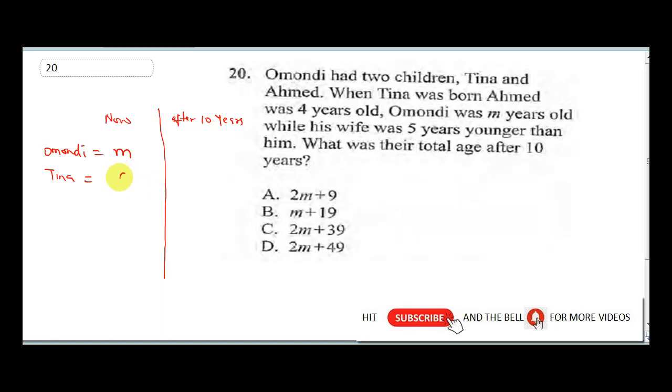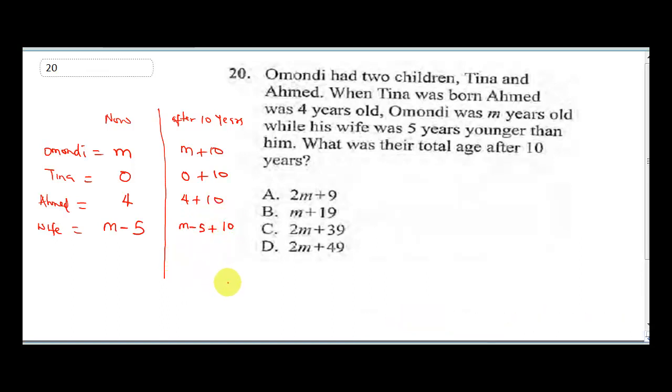Omandi is m years, Tina was just born so Tina is zero, then Ahmed was already four years old so Ahmed is four. His wife was five years younger than Omandi, so that means m minus five. Now after 10 years, Omandi will now be m plus 10, Tina will be zero plus 10, that would be four plus 10, and the wife would be m minus five plus 10. So when we sum this up we will get the total age.